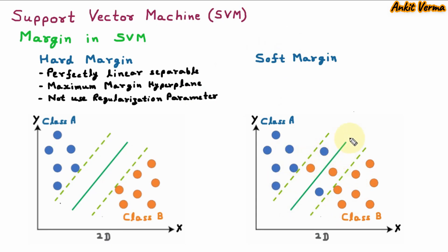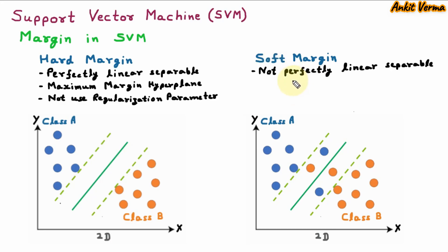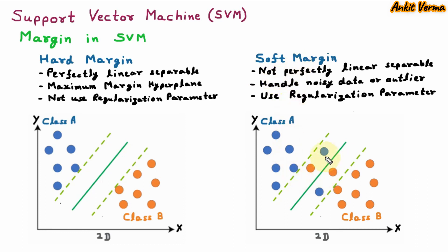In the soft margin diagram, we can see that there is a hyperplane, but a few members of class A are just near the decision boundary or hyperplane, and some are crossing the hyperplane. So this is misclassified data, noisy data, or data with outliers. In soft margin, data points are not perfectly linearly separable. Soft margin can handle noisy data or outliers, and it uses a regularization parameter. Soft margin tolerates a few misclassified data points and balances the trade-off between maximizing the margin and minimizing misclassification.